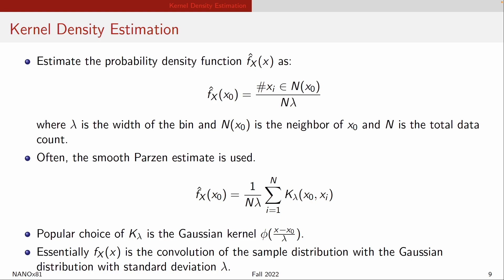Another way of doing kernel regression is kernel density estimation. What you are trying to do is estimate the probability distribution function of your data. You estimate the probability distribution by taking the number of points, applying some function, dividing by the total number of data points — that gives you your probability estimate. You use what is called a smooth Parzen estimate, in which you sum up the kernel for every single data point. The kernel used is typically the Gaussian kernel.